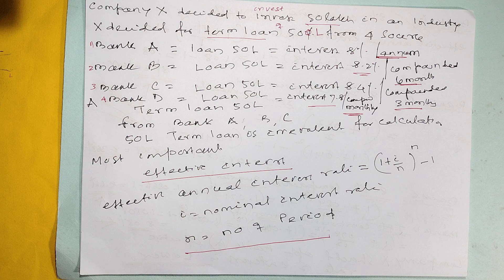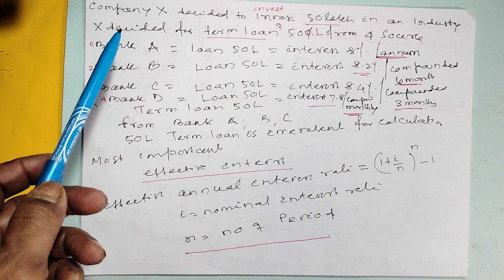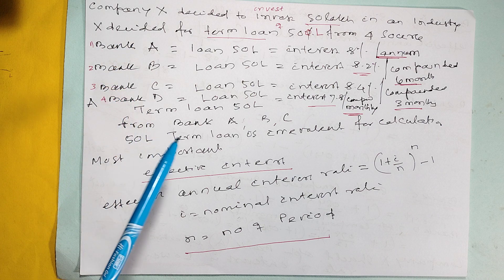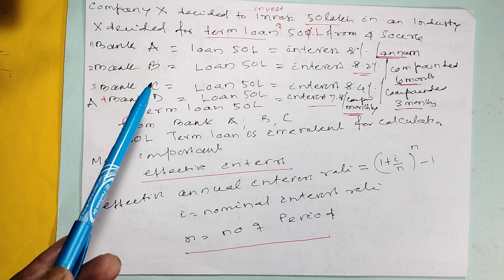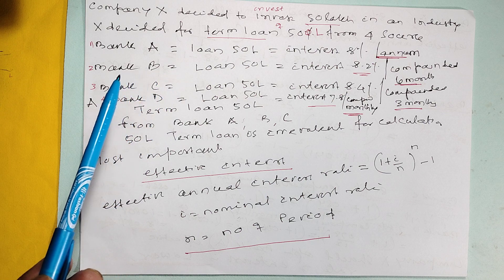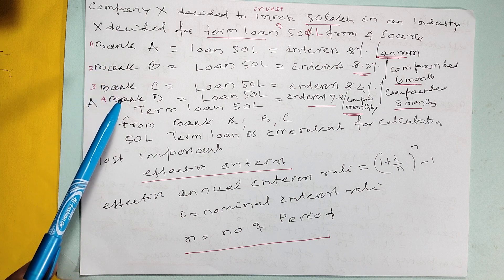The effective rate of interest. Company X decided to invest 50 lakh in an industry and X decided to return loan of the 50 lakh from four bank sources: Bank A, Bank B, Bank C, Bank D.